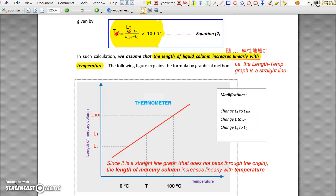We have such a formula because from the graph, we find that the length of the liquid column increases linearly with temperature so that it is a straight line. Although it does not pass through the origin, it is a straight line. That tells us the length of the liquid column increases linearly with the temperature. So that if we know L0 and L100, then we may substitute that in the formula so that we may calculate the unknown temperature T here for a length of liquid column LT easily.